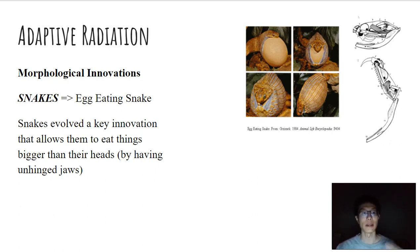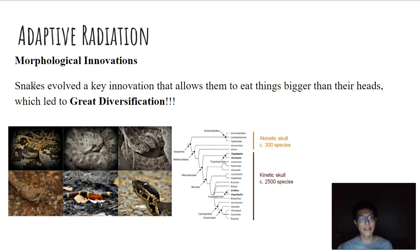So you have this egg-eating snake here that's consuming an egg that's much larger than its head. So this is a morphological innovation. What's really fascinating is that this evolution of this morphological innovation allowed snakes to eat things bigger than their heads. That offers them a new resource, which thus allowed them to have great diversification.